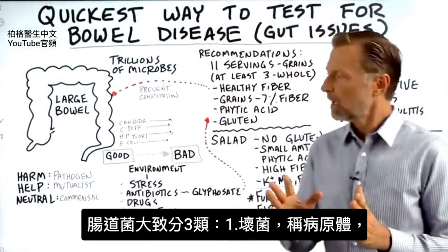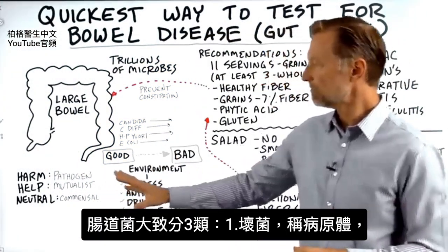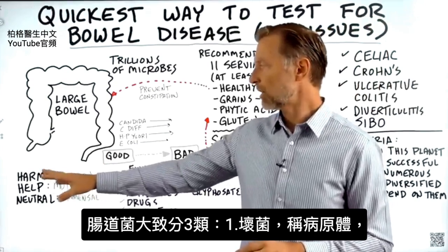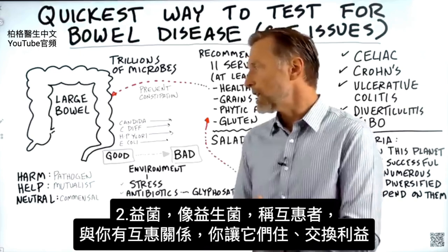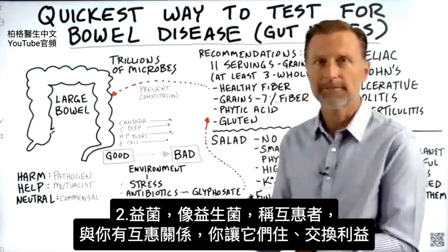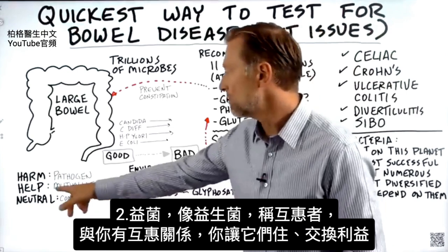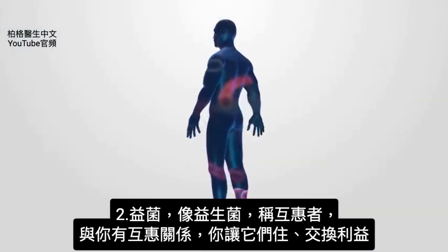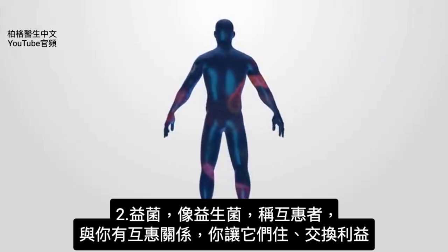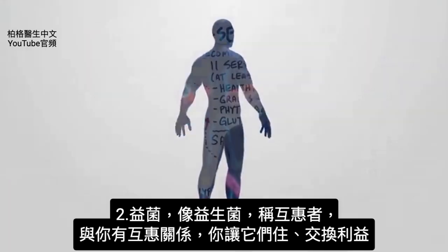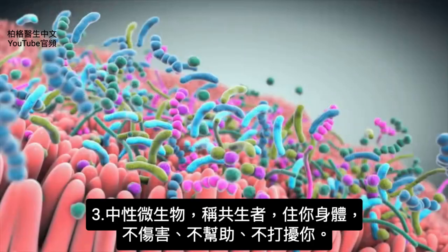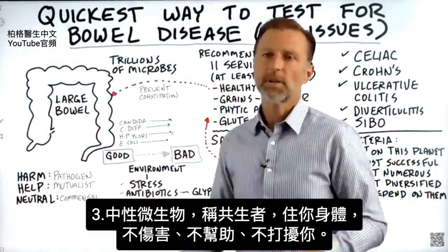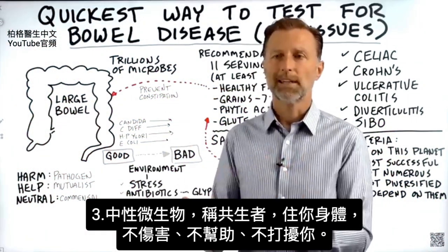Relating to microbes, there are three general categories. You have microbes that are harmful — those are called pathogens. You also have microbes that help you, like friendly bacteria — those are called mutualists. They have a mutual relationship with you: they give you certain benefits and you give them a place to live. Then you have microbes that are kind of neutral, called commensal — they live in your body, they don't harm you, they don't help you, they don't bother you.